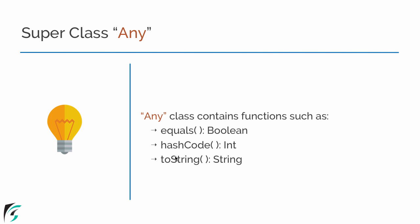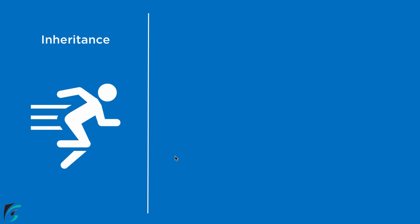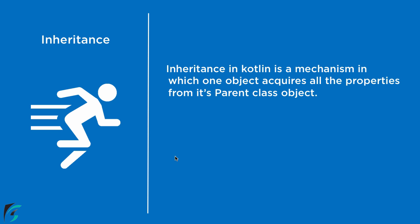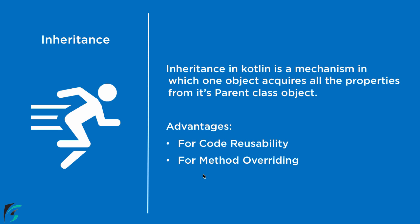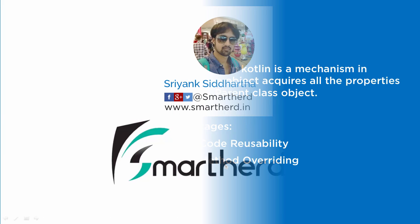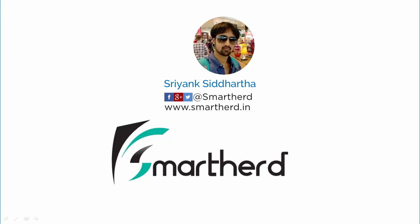But before that, let us now define inheritance in case of Kotlin. Inheritance is a mechanism in which one object class acquires all the properties from its parent class. Now what is the purpose of inheritance? Inheritance simply increases code reusability, which we saw in this video. It also promotes the method overriding functionality. We have not yet seen what method overriding is in case of Kotlin, so we will check it out shortly.